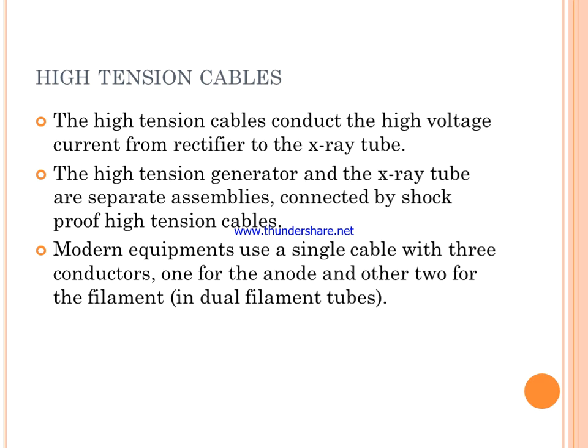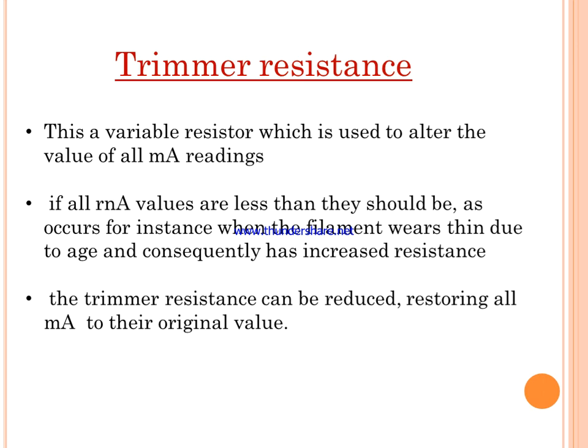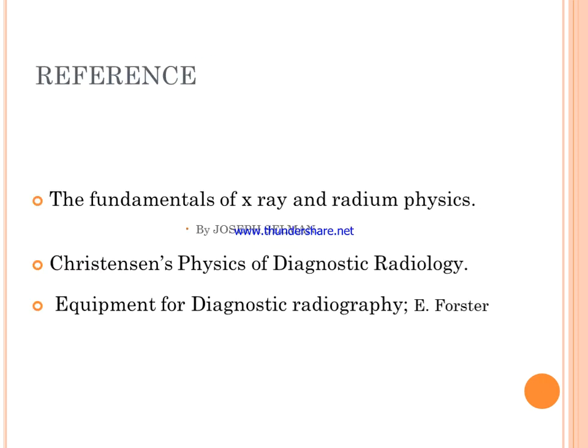In high tension generator model equipment, a single cable with three conductors is used — one for the anode and two for the filament. An image of the X-ray generator and X-ray tube is shown explaining the whole X-ray circuit. The trimmer resistance is a variable resistor used to alter the mA reading if mA values are less than they should be, such as when the filament has become thin due to age and has increased resistance. The trimmer resistance can be reduced to restore mA to the original value.